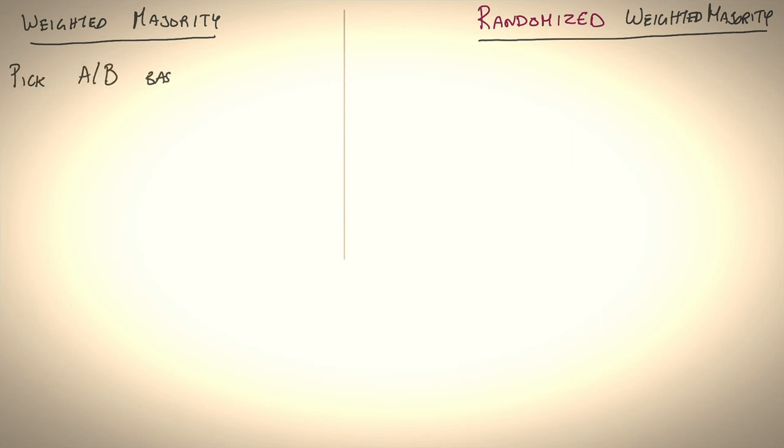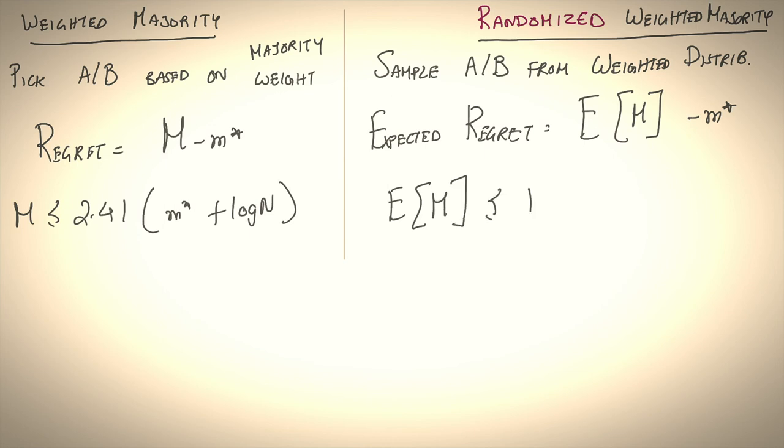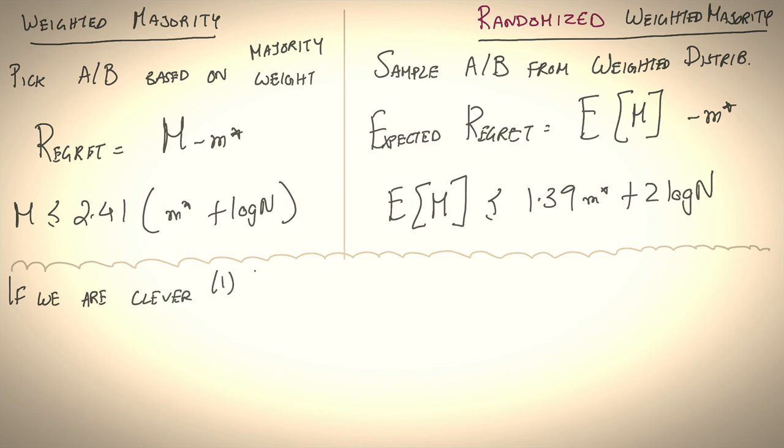We're going to call the randomized version of weighted majority randomized weighted majority. Let's see these algorithms side by side. So on the left-hand side, we have the deterministic version, and that essentially says pick option a or b, based on which got the majority weight. In randomized weighted majority, we are going to sample a or b from a distribution dictated by the weights. So for weighted majority, the regret is simply m minus m star, while for randomized weighted majority, you have an expected regret, which is the expected mistakes the learner makes, minus m star. You already saw the bound for weighted majority. Turns out for randomized weighted majority, you can slash that bound almost by half.